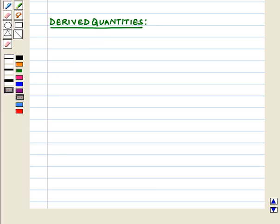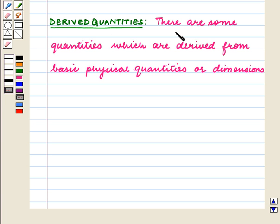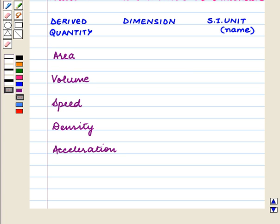Now let us discuss derived quantities. There are some quantities which are derived from basic physical quantities or dimensions. These are called derived quantities. The following are some of the derived quantities: area, volume, speed, density, and acceleration.